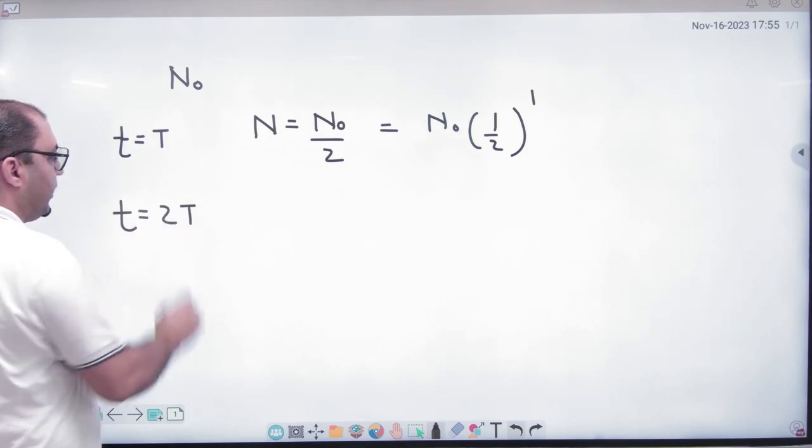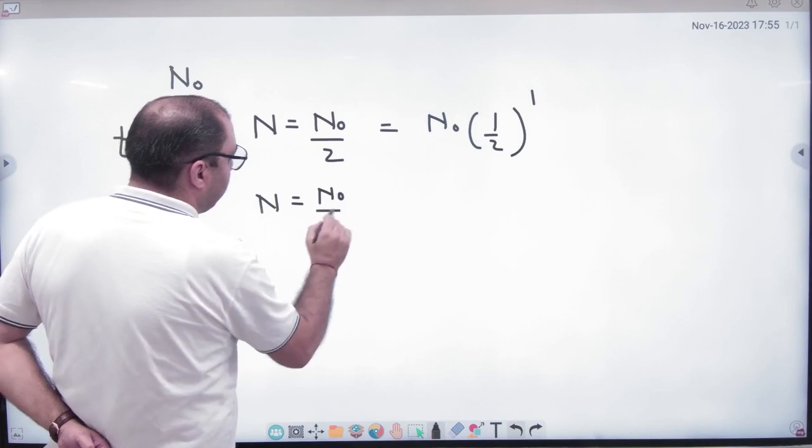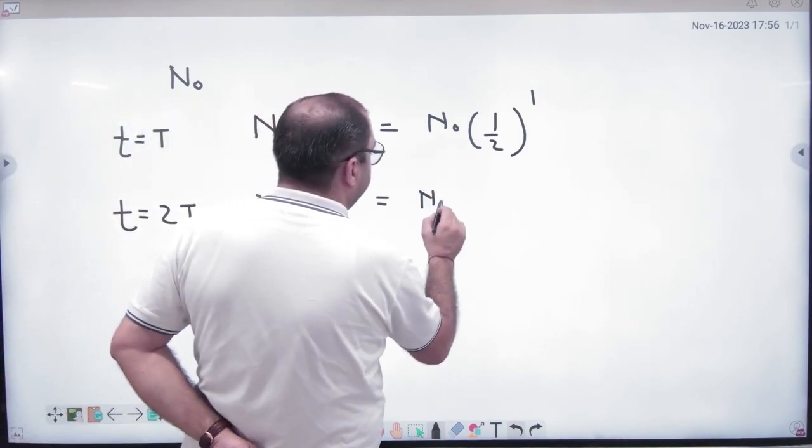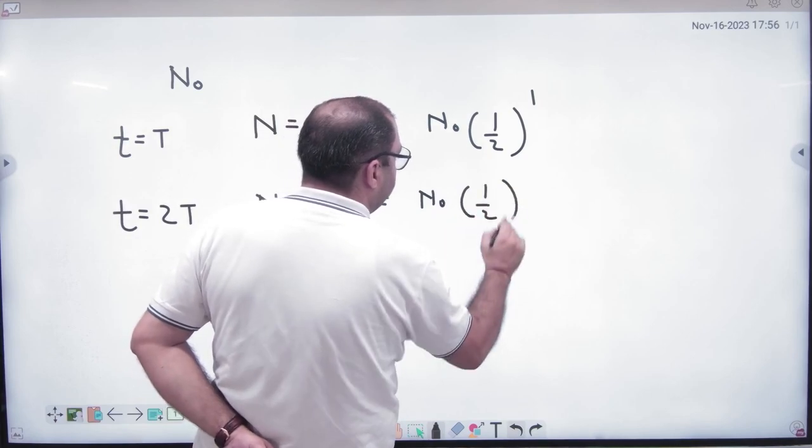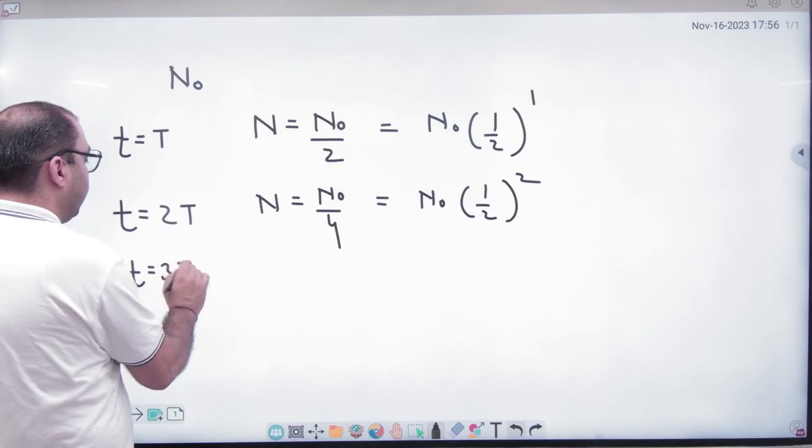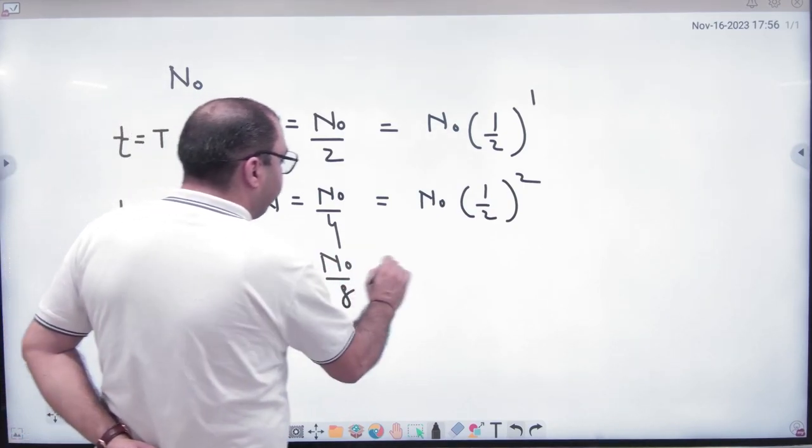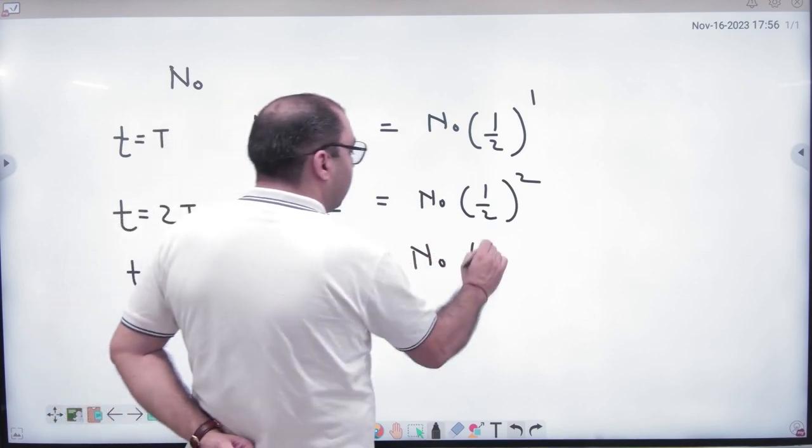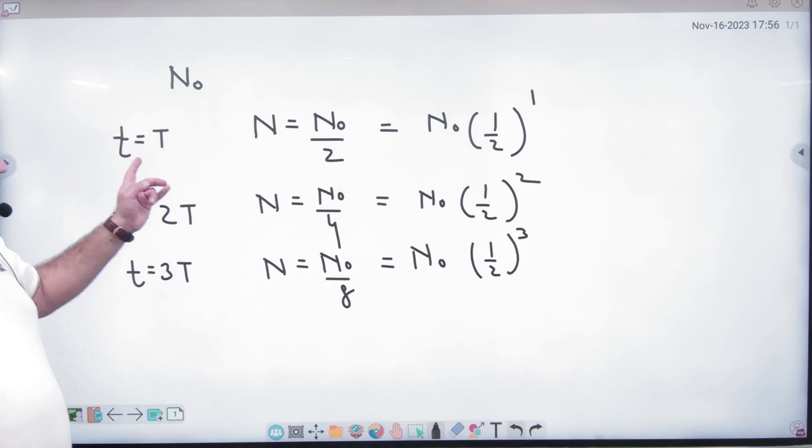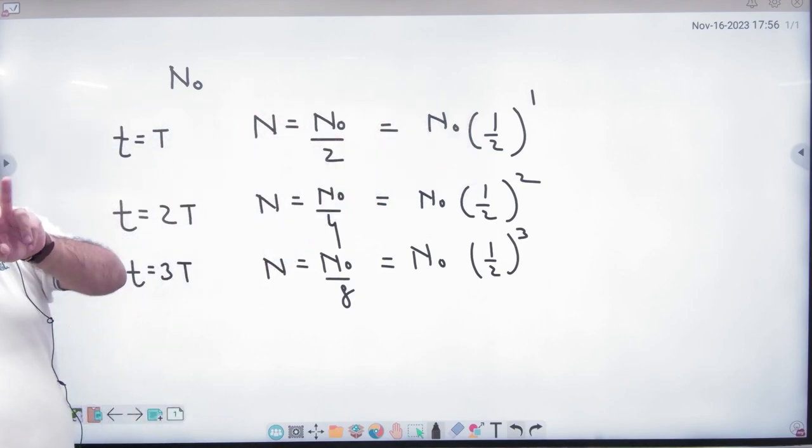At time 2T number of atom N₀ by 2, so you can write N₀ half raised to power 2. Like t is equal to 3T number of atom N₀ by 8, N₀ half raised to power 3. Which means first half life period number of atom left N₀ half raised to power 1, second half life period.